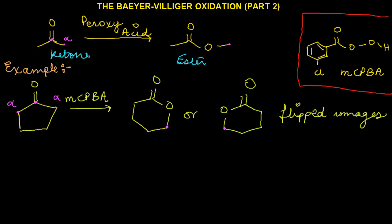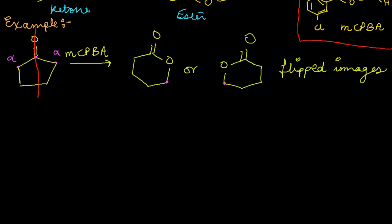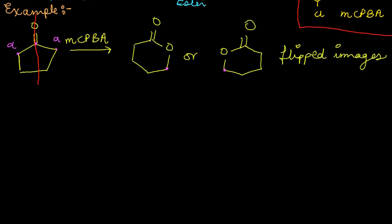Both are right because our starting ketone is symmetrical — we can draw a line of symmetry down its middle. Both alpha carbons are identical; they have the same substituents and the same bonding, which is why either product works fine. But now let's look at what would happen if our ketone wasn't so simple — what if it was not symmetrical? And that leads to regiochemistry: where does the oxygen insert into a compound?